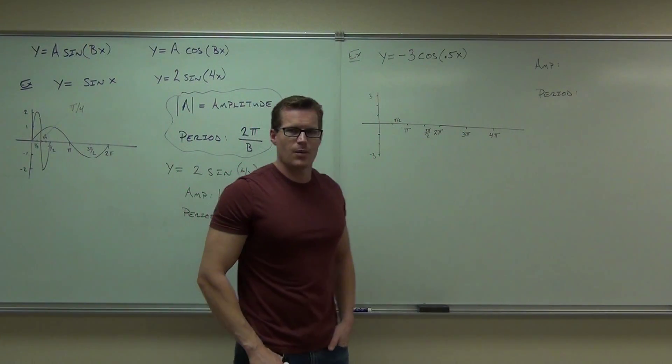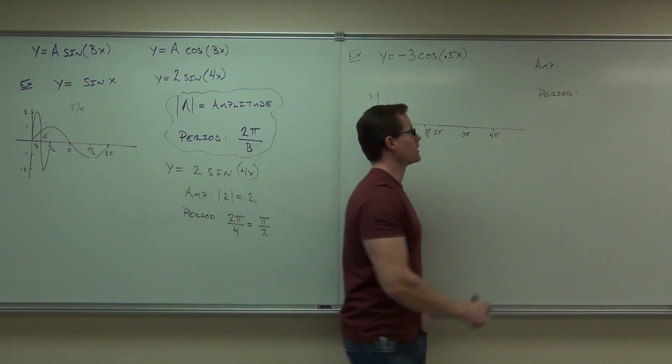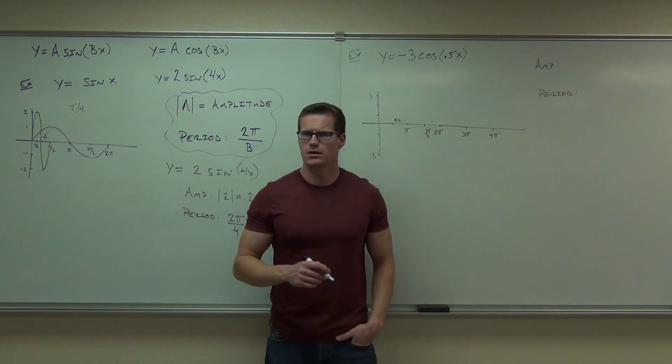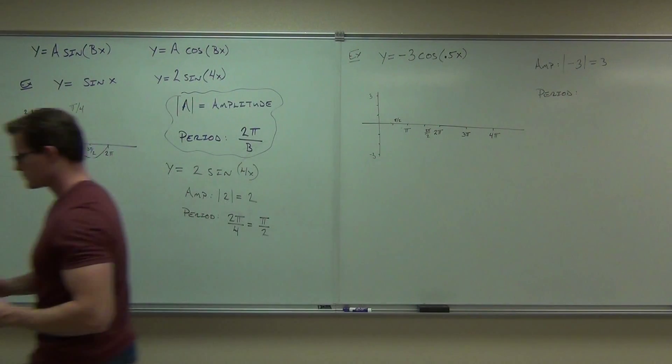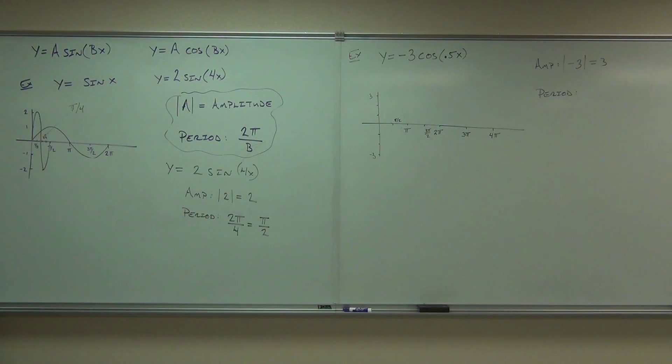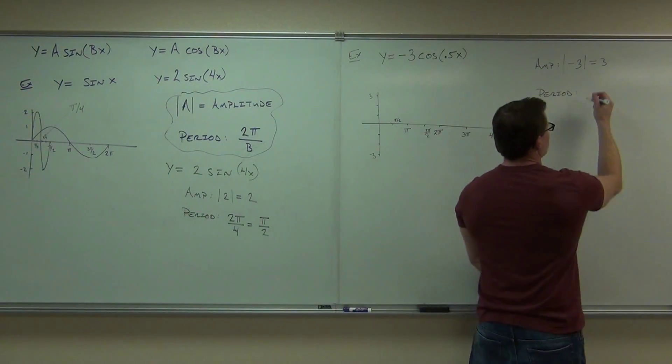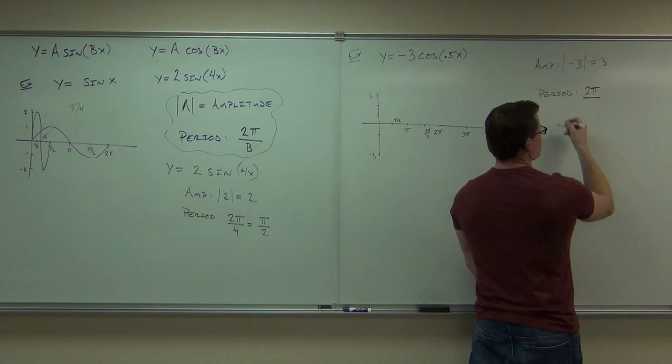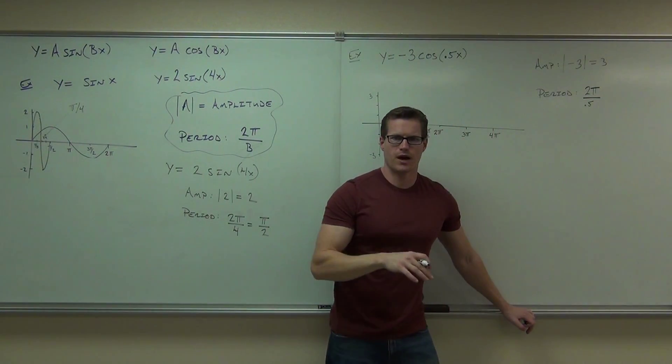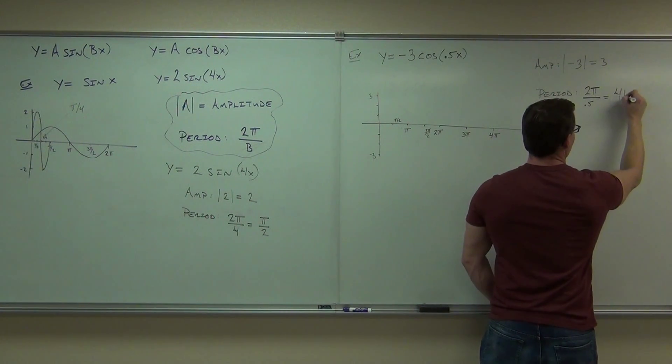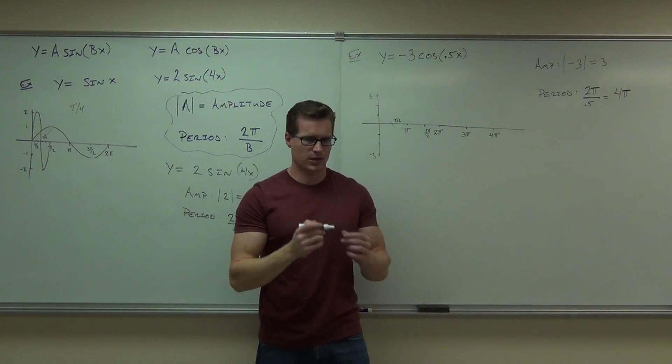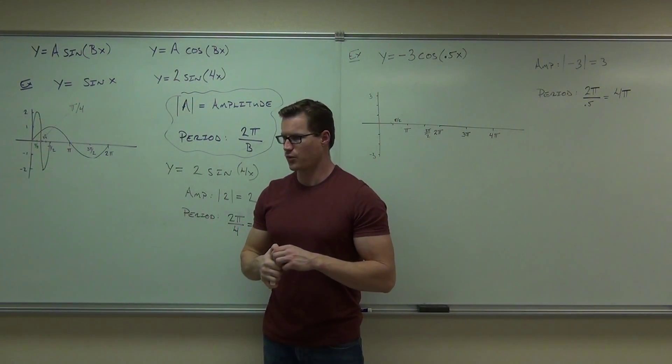So how much is your amplitude? Three. And your period, did you find your period yet? We find period by doing 2π over whatever our b is. In our case, our b is 0.5. If we divide 2π by 0.5, we're going to get 4π. Did you get 4π? Use a calculator if you have to. 2 divided by 0.5 is 4, 4π.